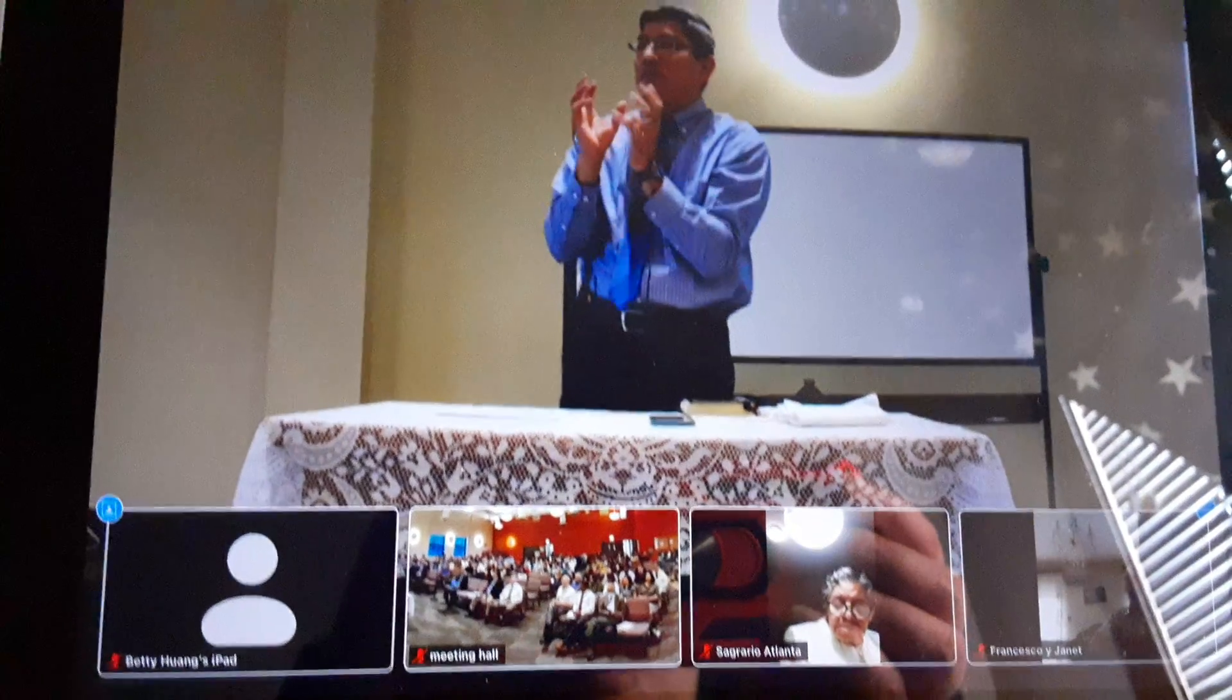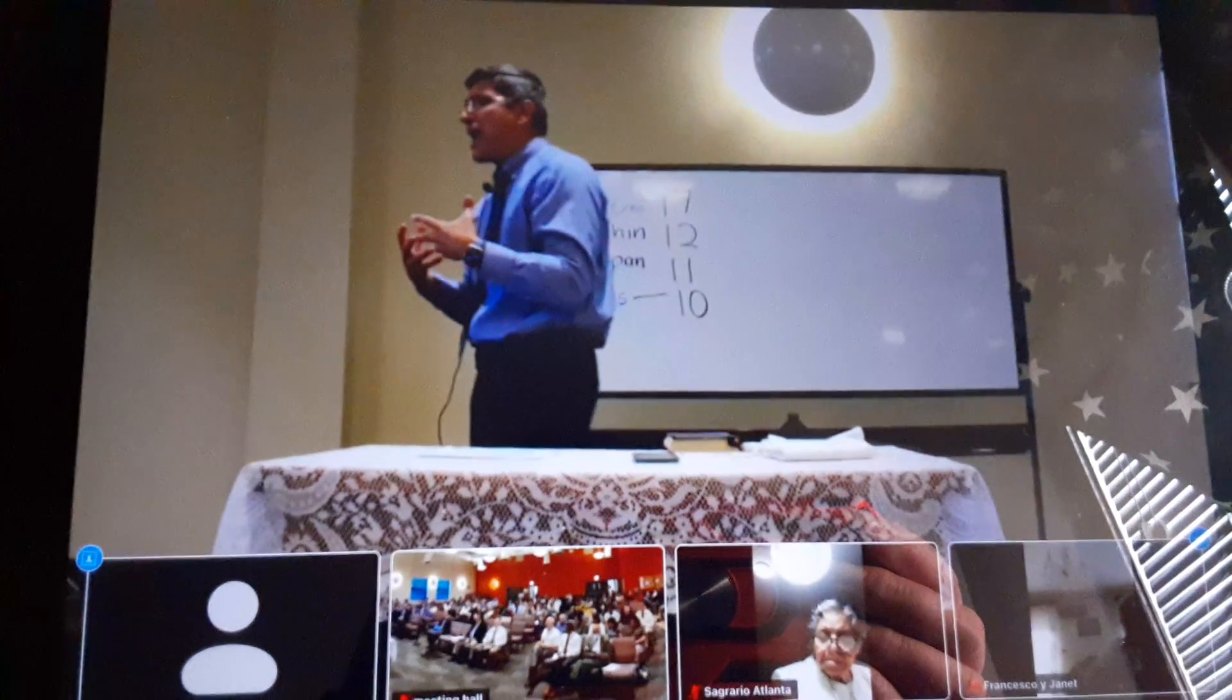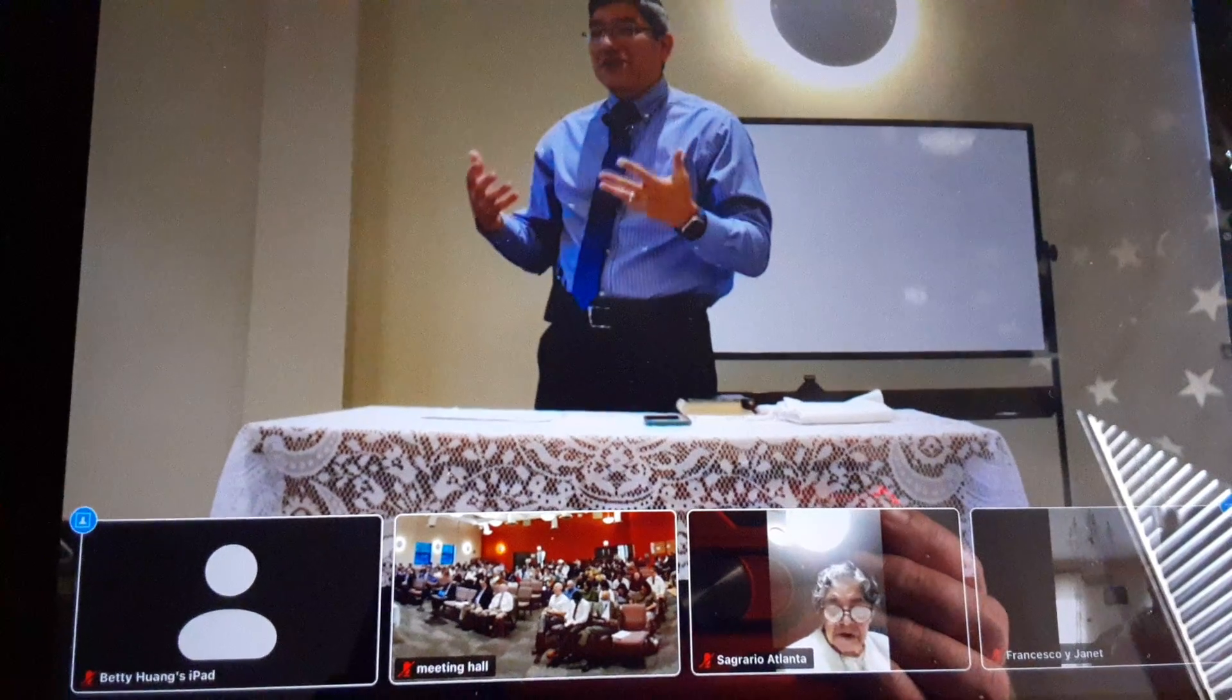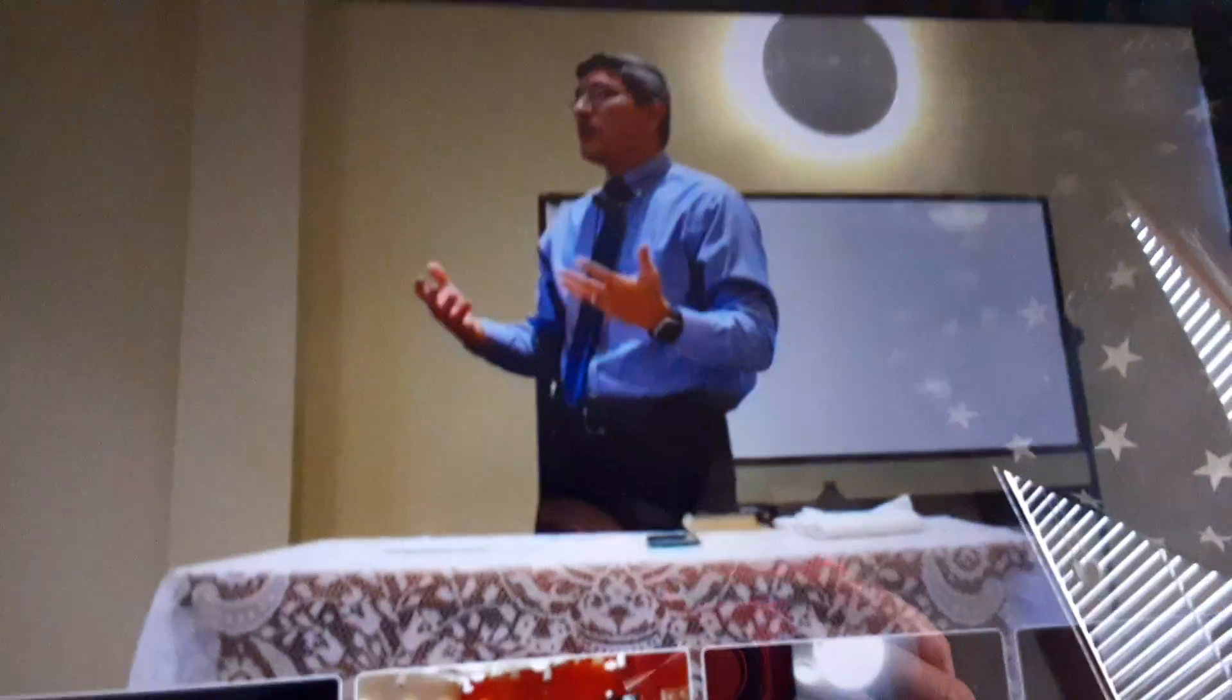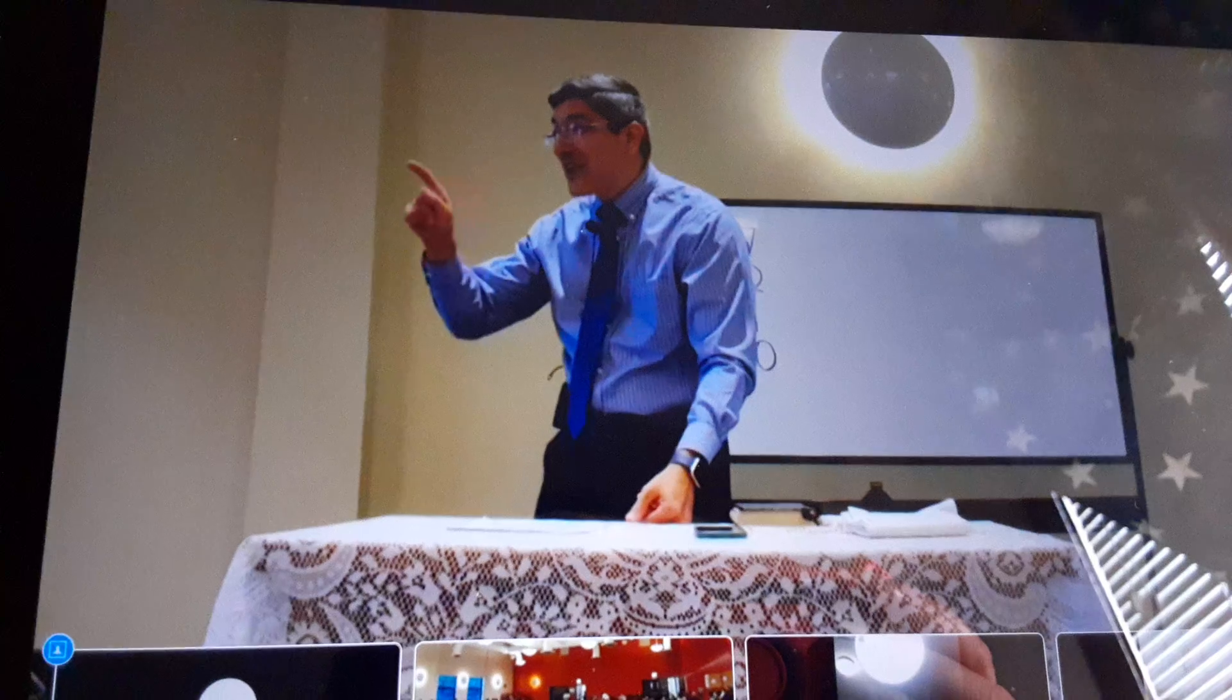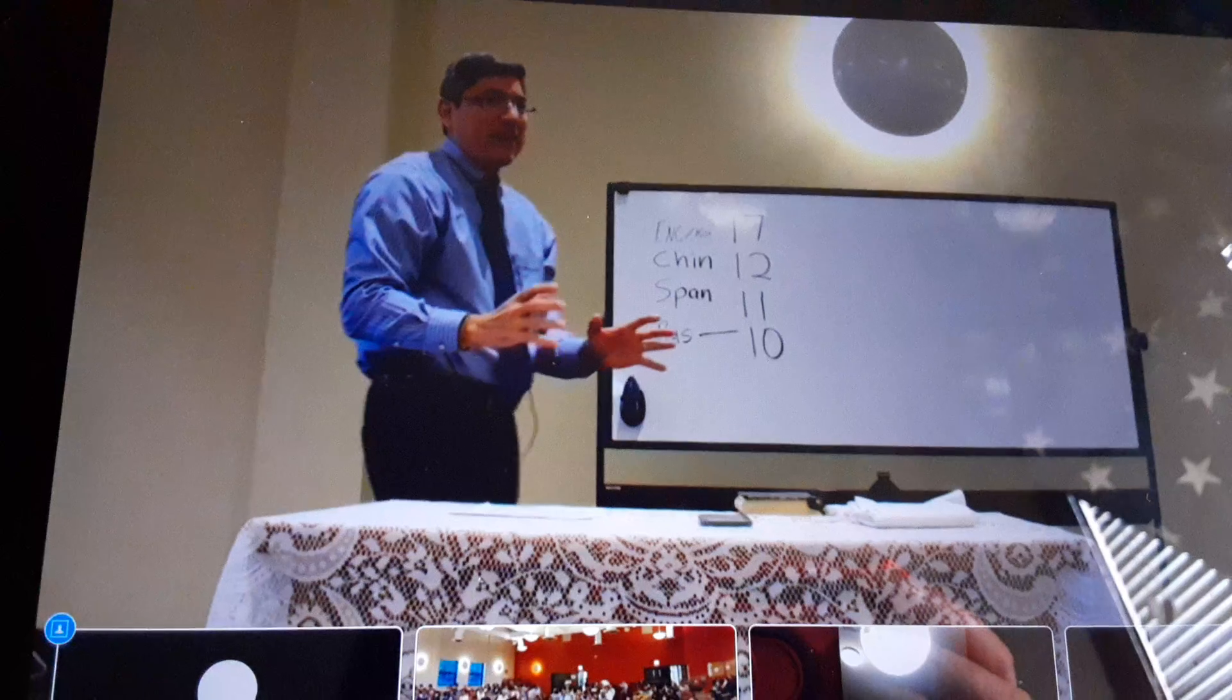But, so we get stuck here in Matthew 13, right? The heart. The hardness, the worldly traffic, the hidden things no one knows about. The choking of the life through the anxieties of the age, the deceitfulness of riches. And we can get stuck in Matthew 13, dealing with that heart. But you know where the Lord is, where he can deal with it? In John 15, he's the husbandman. You know what husbandman means? It means the tiller of the ground. Do you know where he can till and deal with that heart? And with all the problems of the heart? When we're taking care of bearing fruit in John 15.